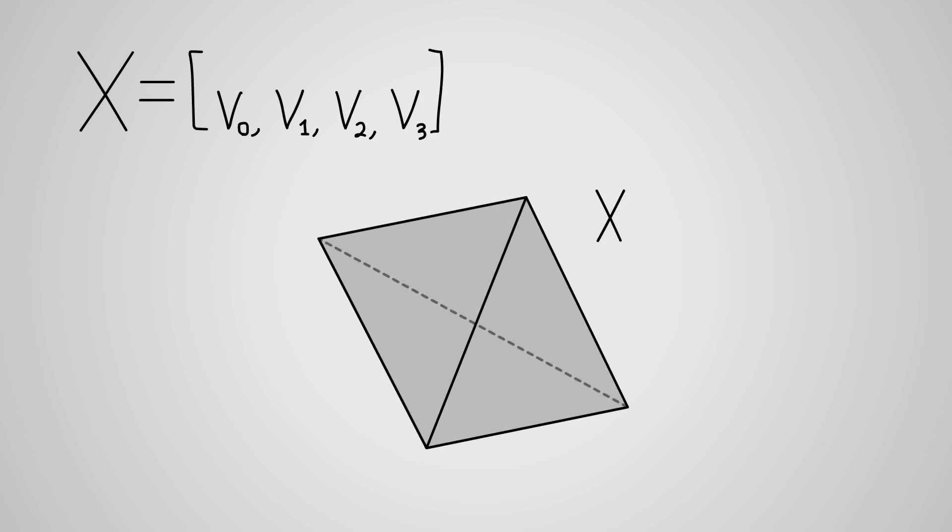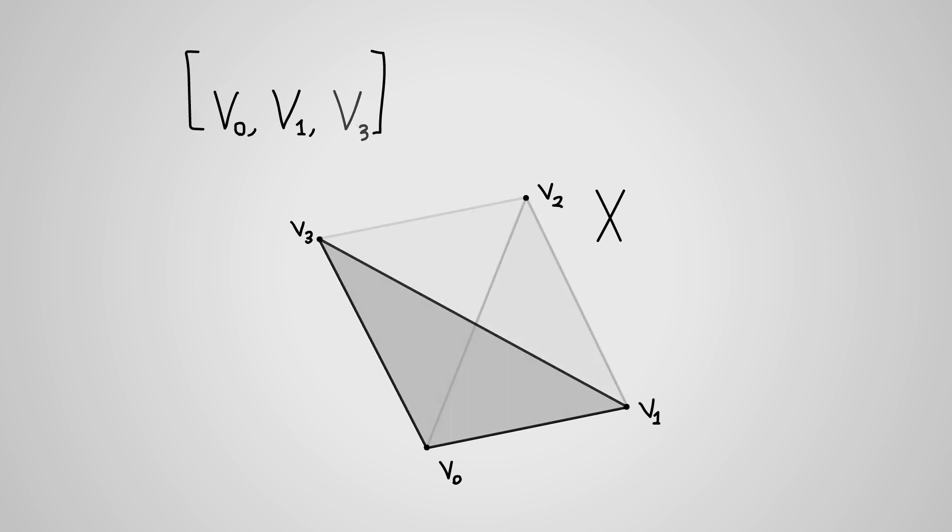So, an n simplex, such as this 3 simplex x, is the convex hull of its n plus 1 vertices, V0 to Vn. If we take the convex hull of some, but not all, of these vertices, we get a simplex of lower dimension, which sits inside the boundary of x.